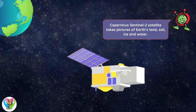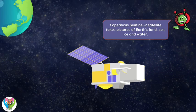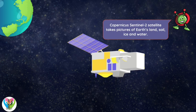The Copernicus Sentinel-2 satellite takes pictures of Earth's land, soil, ice and water.